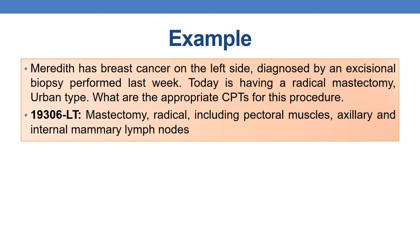Example: Meredith has breast cancer on the left side diagnosed by an incisional biopsy performed last week. Today she is having a radical mastectomy urban type. The appropriate CPT is 19306 with LT modifier to indicate the left side — mastectomy radical including pectoralis muscles, axillary and internal mammary lymph nodes. Thank you for watching. Please subscribe for further videos on medical coding and CPC training.